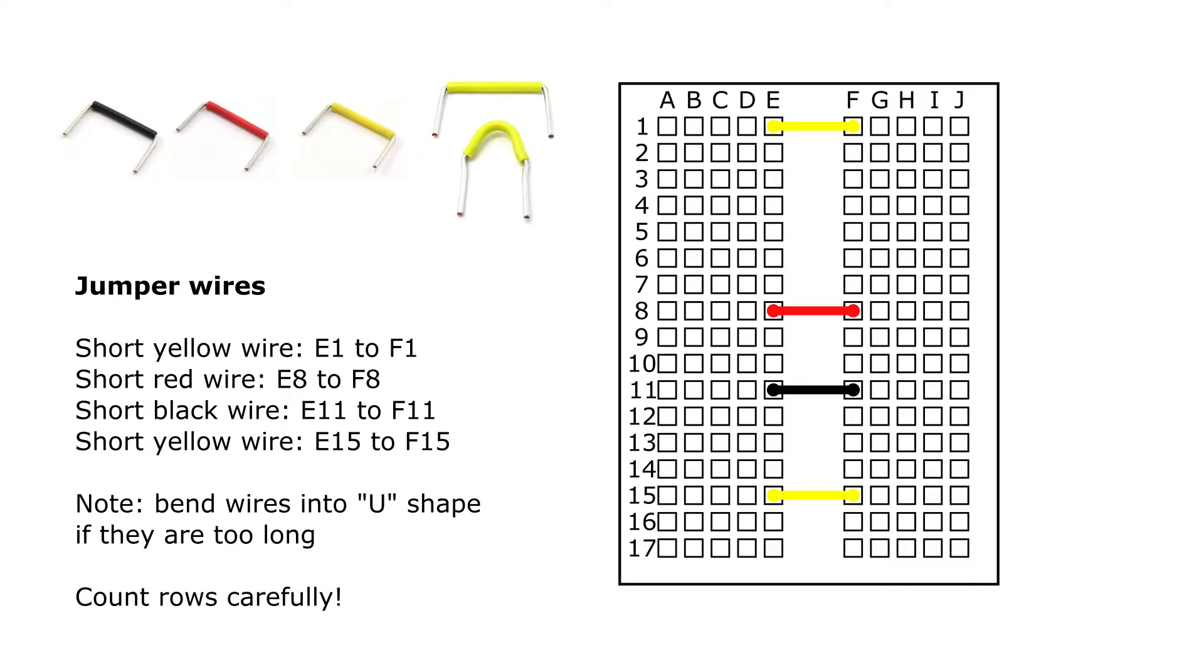If you follow along with our directions, first you want to connect a yellow jumper wire from hole E1 to F1, a short red jumper wire from hole E8 to F8, a short black wire from E11 to F11, and another short yellow wire from E15 to F15. Now you might notice that the wires are a little too long to make those connections if you leave them flat, so you can bend them into a U shape if necessary, or a little C shape if that helps, just to get them the exact right distance between those holes. And especially when you start out here, you really want to count those rows carefully, because if you get a jumper wire off by just one row, that effect can kind of cascade and it'll mess everything up. So count the rows carefully and make sure you get those in the right place.